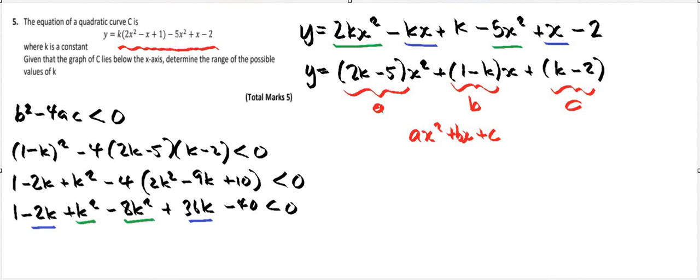So I've got 1k, but I'm taking away 8, so that's minus 7k squared plus I've got 36k, but I'm taking away 2, so that leaves me with 34k. And I'm taking away 40 but I'm adding 1, so let's take away 39 is less than zero.